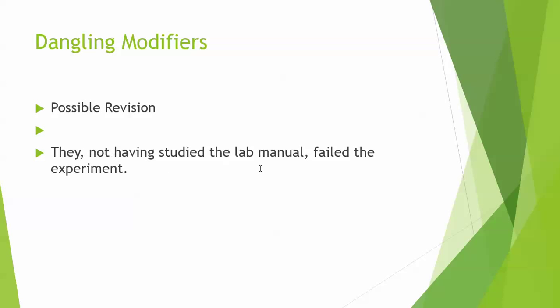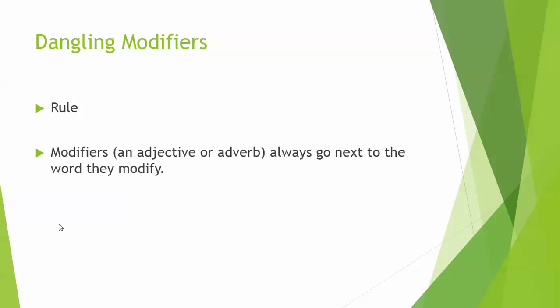So the rule to remember: if you have dangling modifiers marked on your papers, or if you know that you're committing them, remember that modifiers — adjectives and adverbs, including phrases as well as single words — always go next to the word that they modify in English. I hope this is helpful to you.